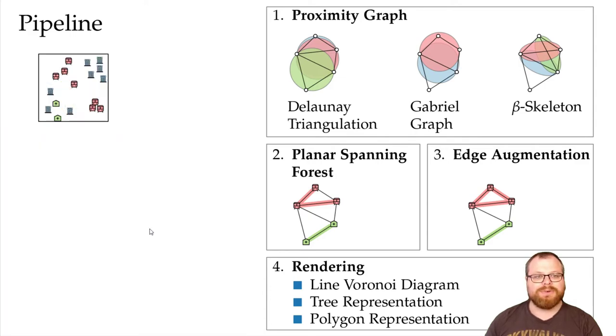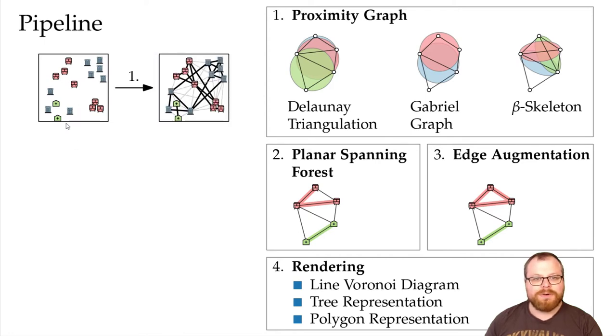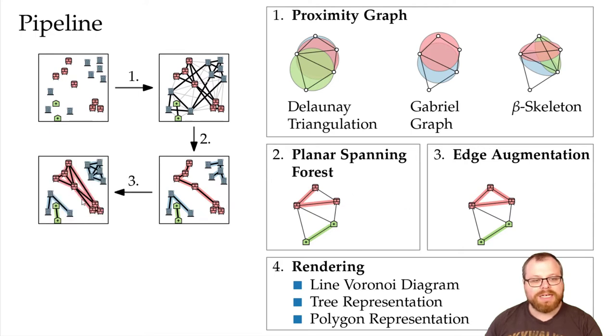Let's have a look at a smaller example. We have three sets of points here. First we create a proximity graph with a beta skeleton with low beta, and then we can remove all the edges that are not monochromatic. Now we can find a planar spanning forest. And in step 3, add back the edges we can inside the same cluster. And now we use a polygon representation to render the solution.